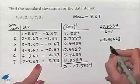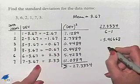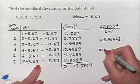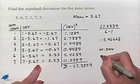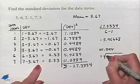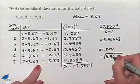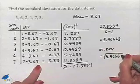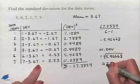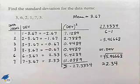To finish the problem, the standard deviation equals the square root of the value we just found. So we take the square root of 5.46668, which is approximately equal to 2.34 as our standard deviation.